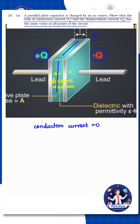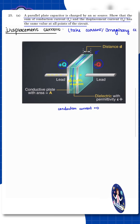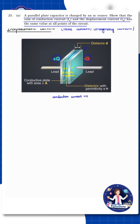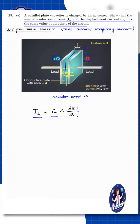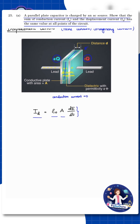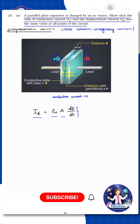The electric field between the plates builds up, and this gives rise to the displacement current. The displacement current formula is: ID equals ε₀ times A times dE/dt, where ID is the displacement current, ε₀ is the permittivity of free space, A is the area of the plates, and dE/dt is the change in electric field with respect to time. This current-like effect is called displacement current.